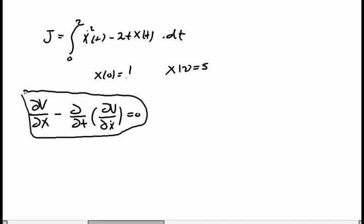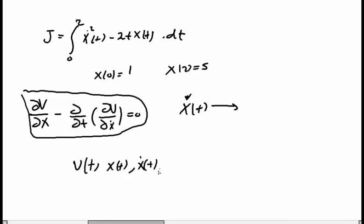What we need at the bottom line is x*(t), which is the optimal state trajectory for this control problem. First, we identify V — V is a function of t, x(t), and x-dot(t) — which equals x-dot squared minus 2t·x(t).